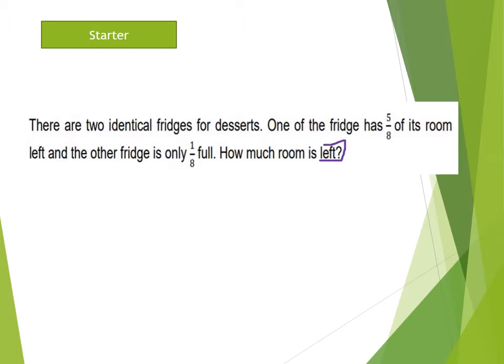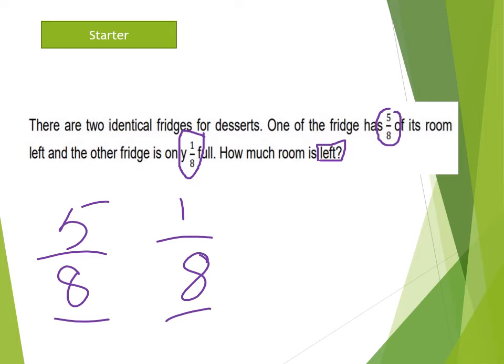By looking at the key word we know that the mathematical operation we use here is subtraction. So we need to find out how much room is left. So first one is 5 out of 8 and the other one is 1 out of 8. Looking at the denominators we can understand that the denominators are same and those are like fractions. So now we are going to subtract. 5 minus 1 is 4 out of 8.